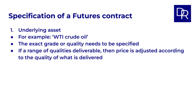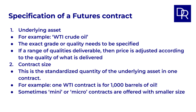Imagine a futures contract for coffee beans. The exchange might specify a standard grade of Arabica beans, but also allow delivery of a slightly higher or lower grade, with a predefined price adjustment to reflect the quality difference. Next is contract size — the standardized quantity of the underlying asset in one contract. It's a crucial decision. If the contract is too large, smaller traders might be excluded. If it's too small, trading costs per unit might become too high. To accommodate different traders, exchanges sometimes offer both standard and mini or micro contracts with varying contract sizes.